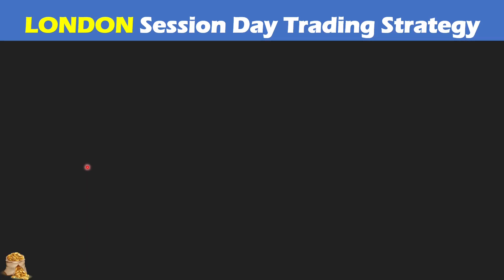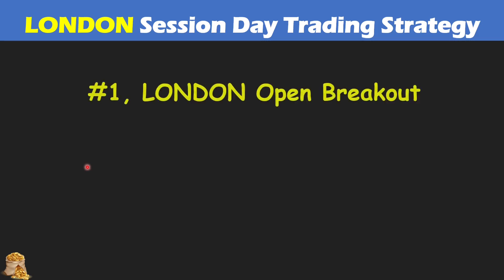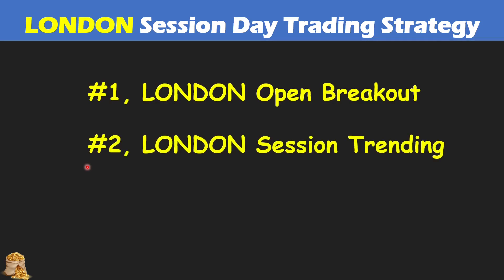Most of the time volume will pick up starting with the London session if you're doing day trading, and then it will extend to the New York session. Understanding how to trade with the London session is very important, and there are normally three strategies. The first is called London open breakout, the second is London session trending, and the third is called New York reversal.